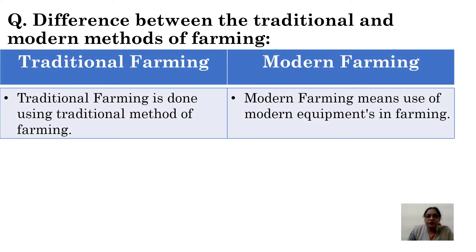The first difference is that traditional farming is done using traditional methods. Modern farming means the use of modern equipment in farming, where modern equipment are used to carry out farm work.